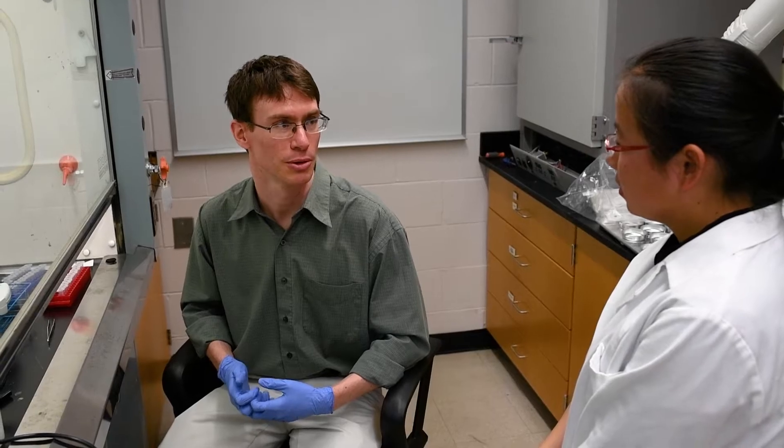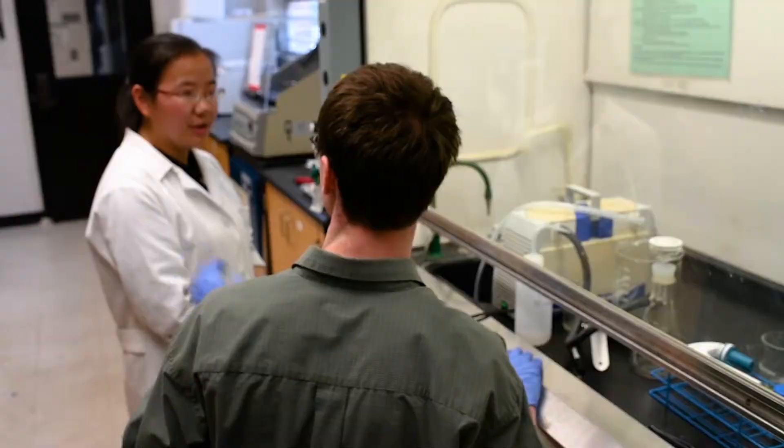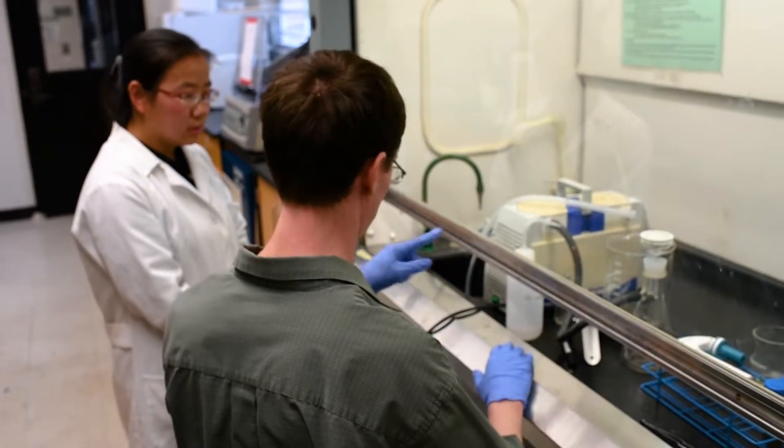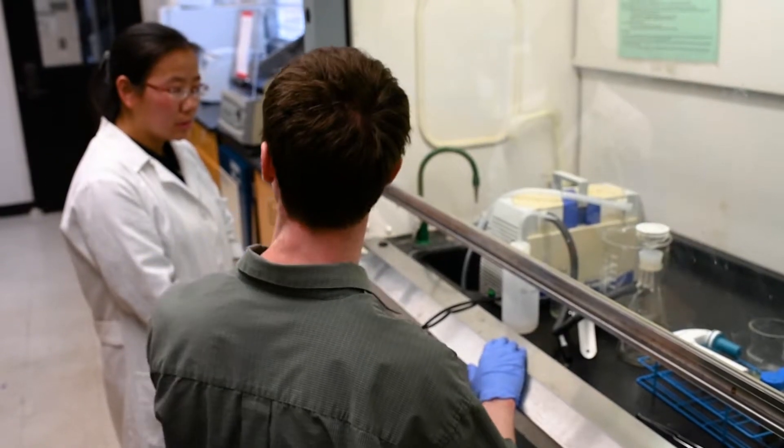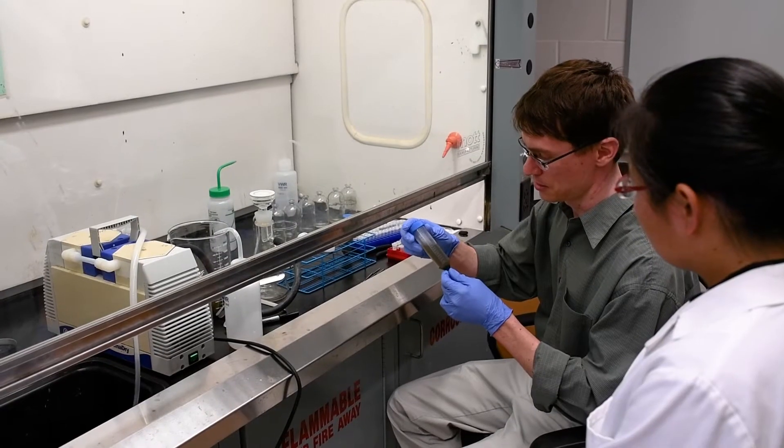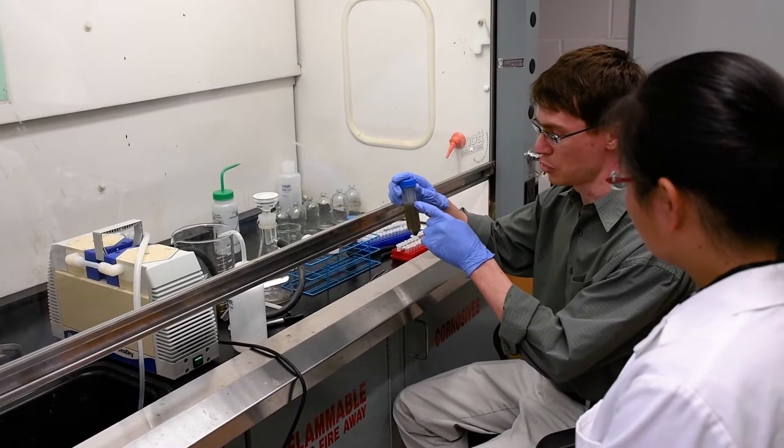And algae can grow in deserts. They can grow in the ocean. And these are areas that we don't currently really take advantage of in terms of cultivating crops. So it really cuts down on that issue of food versus fuel. That's one of the key benefits of algae, is that they're just so fast-growing, and they can grow in places other crops can't.